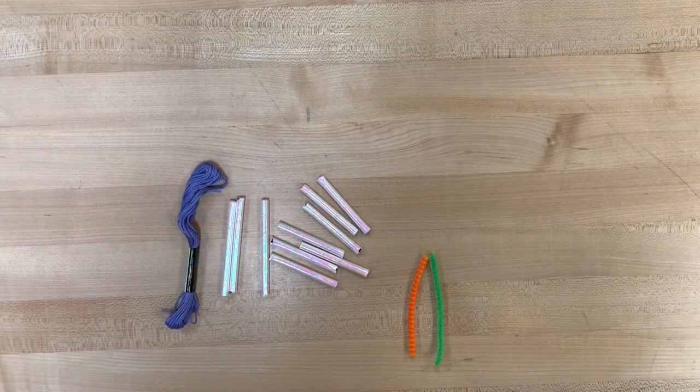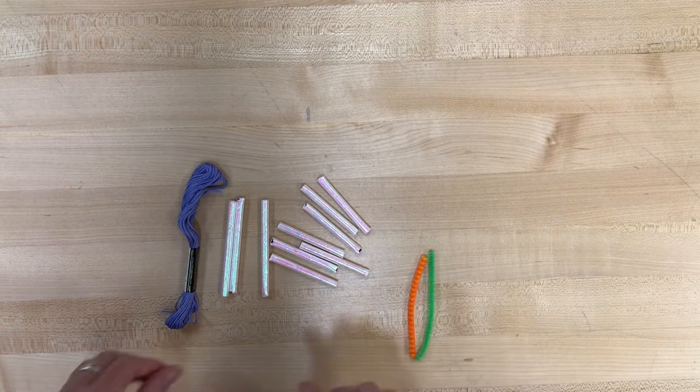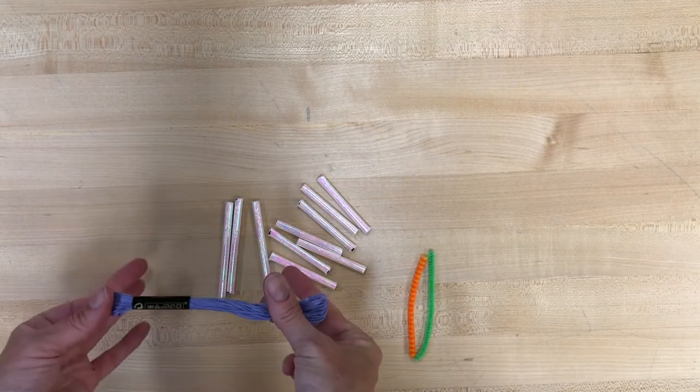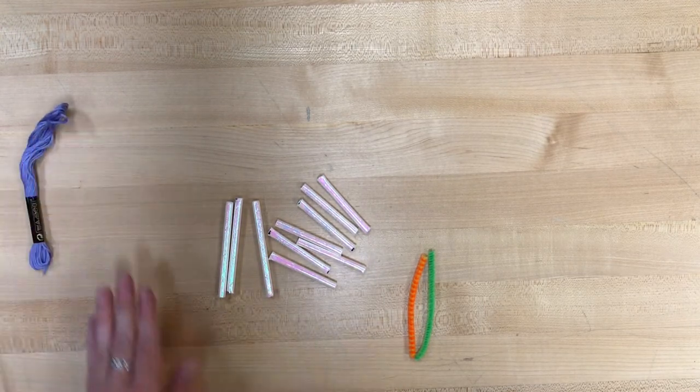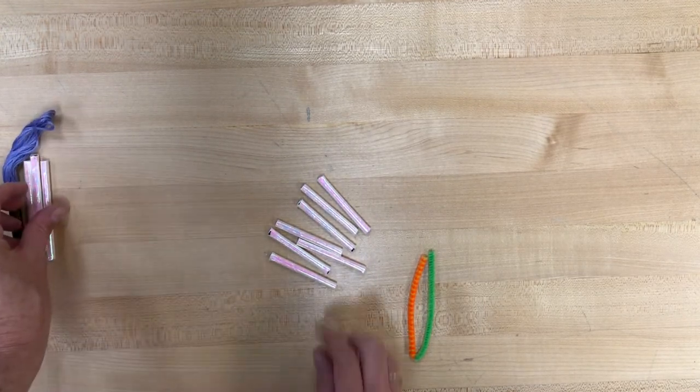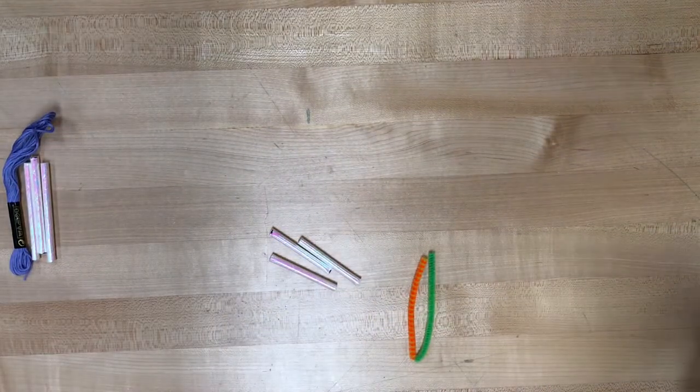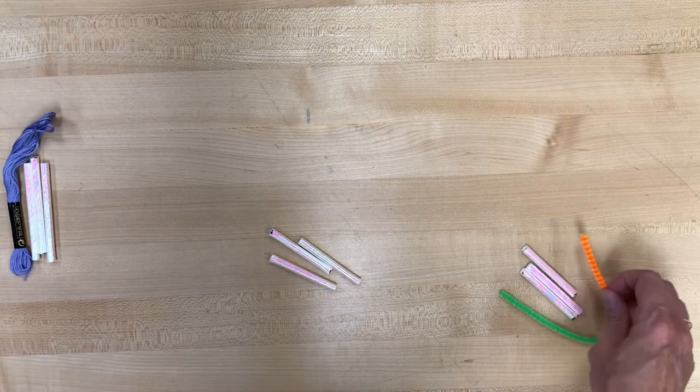Okay, so if you dump out what's inside your cup, you're gonna have enough to make three of these. So all of these straws, embroidery thread, and pipe cleaners. You're gonna have longer straws, you're gonna have shorter straws, three longer and six shorter for each gem.